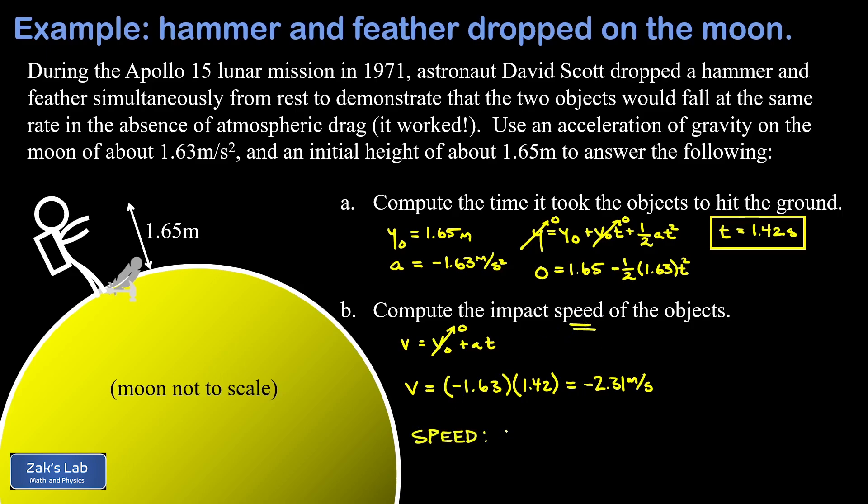So the most correct final answer here is to say the final speed when the hammer and feather hit the surface of the moon is 2.31 meters per second with no minus sign on it.